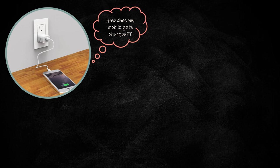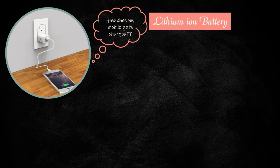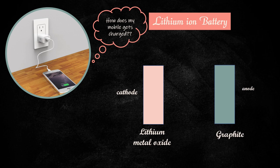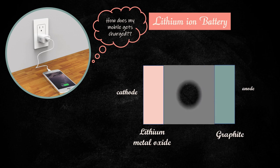First, let's come to our first question. How does my mobile get charged? Lithium ion batteries are used in most of our mobiles. The cathode of lithium ion battery is made of lithium metal oxide. The anode is made of graphite. They are separated by an electrolyte.